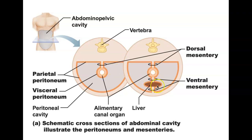It gets a little more confusing because we have ventral mesentery as well. Here you can see the liver — an intraperitoneal organ also suspended by the fusion of visceral and parietal peritoneum. Know the term mesentery and think of it as an anchoring system: it's where parietal and visceral peritoneum fuse, and it helps anchor alimentary canal organs.